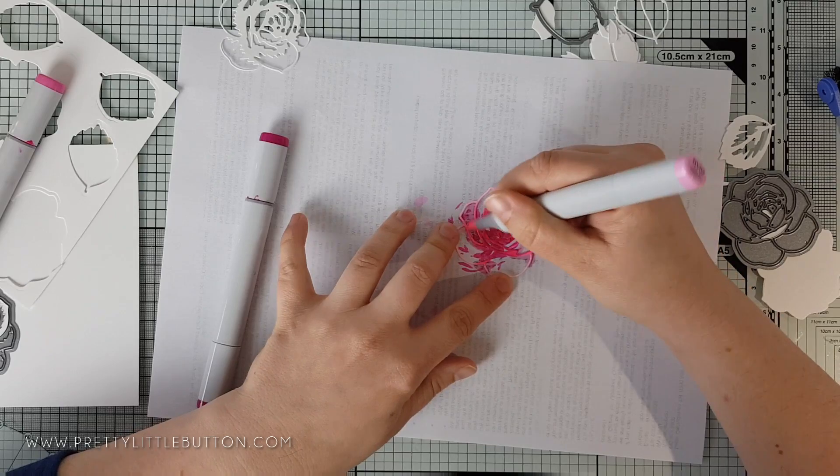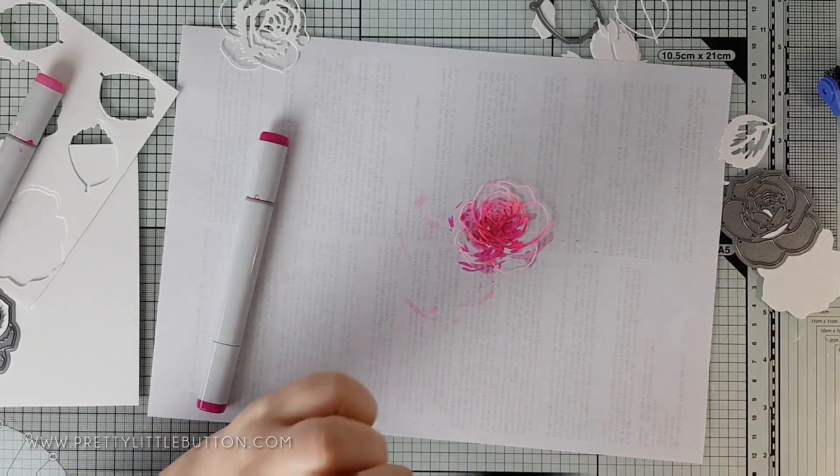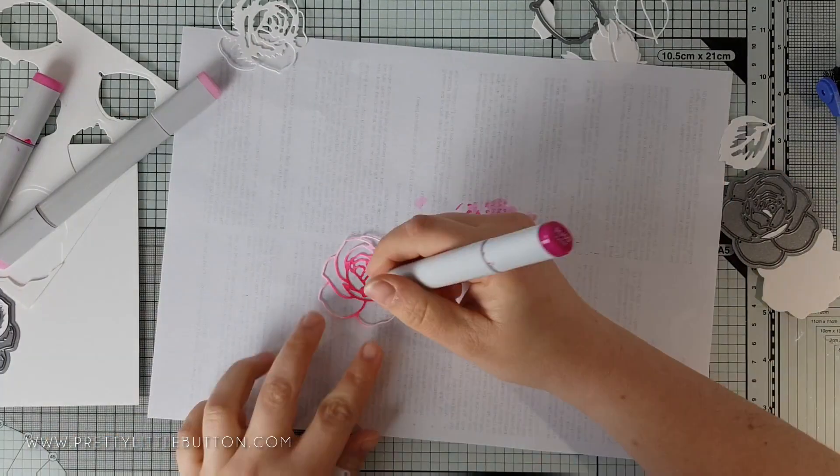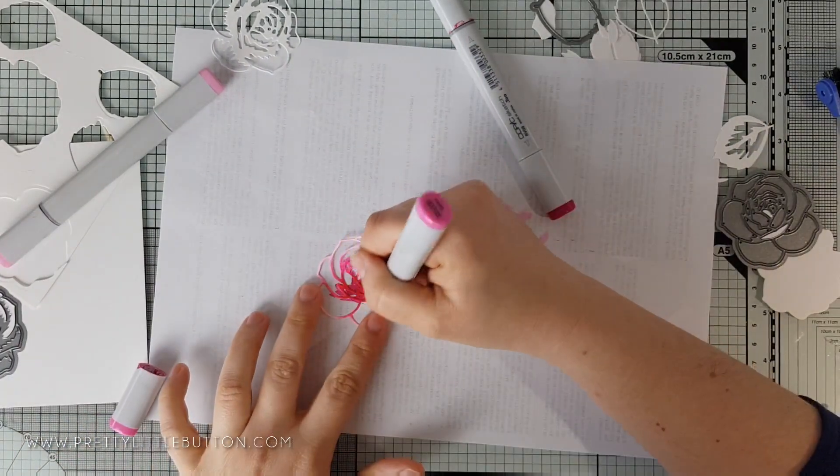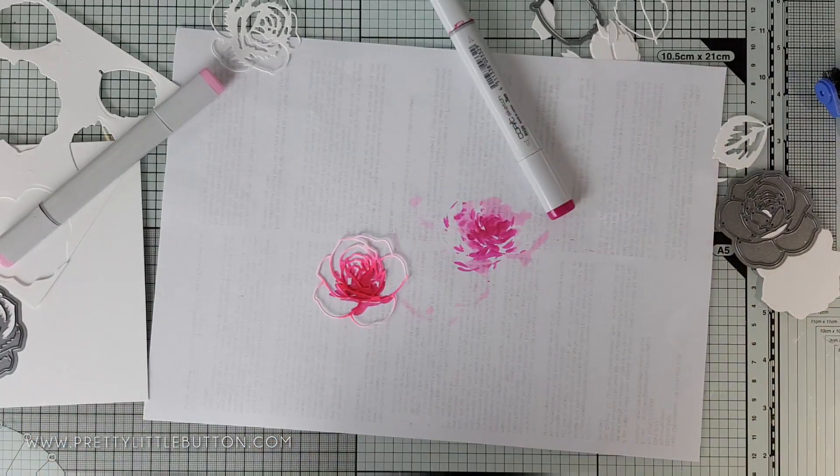To get a lovely blend on the die cut, you will want to go back with your midtone color and blend out between your darker and your midtone color, and then repeat this with your lightest color, so you're blending between your midtone and your lighter color.